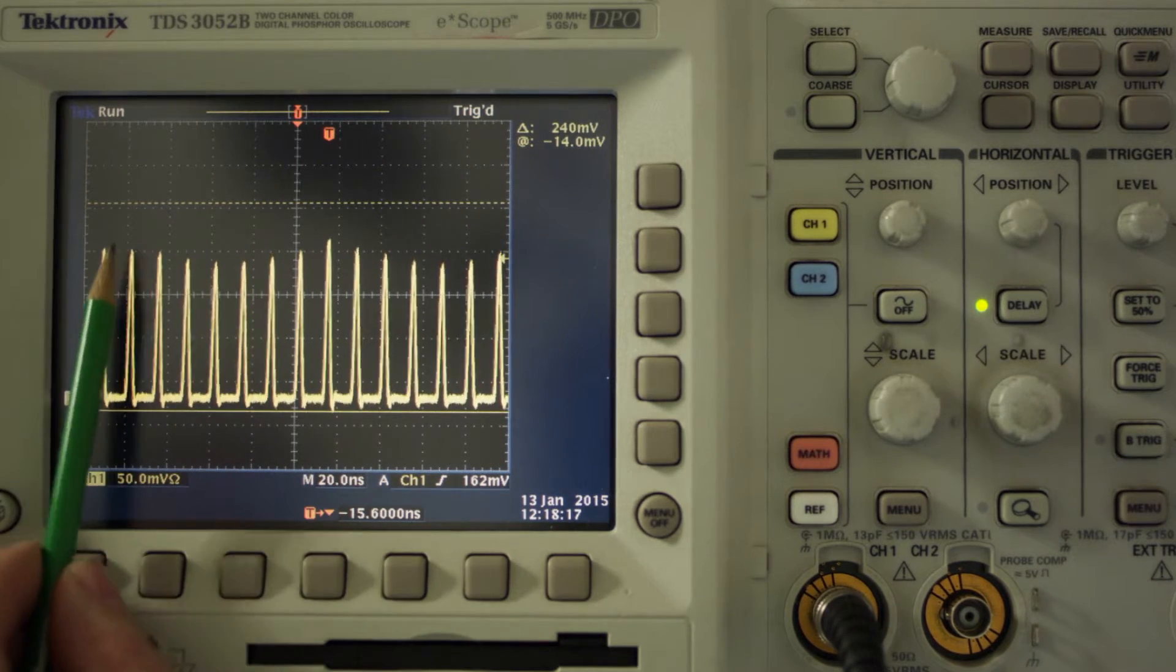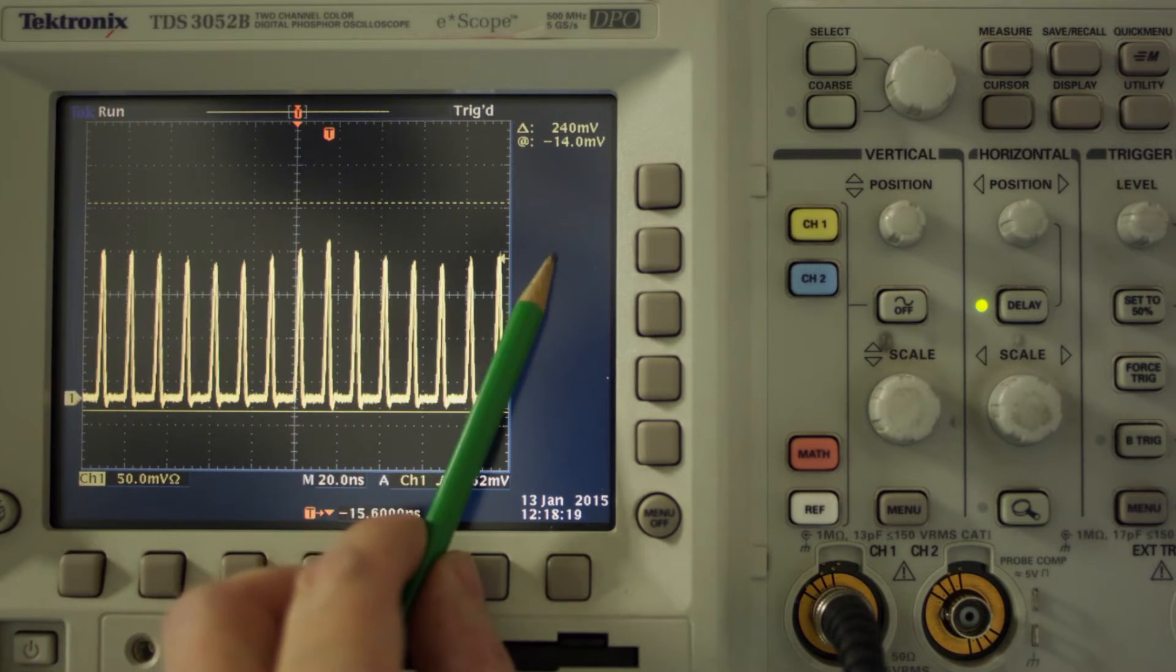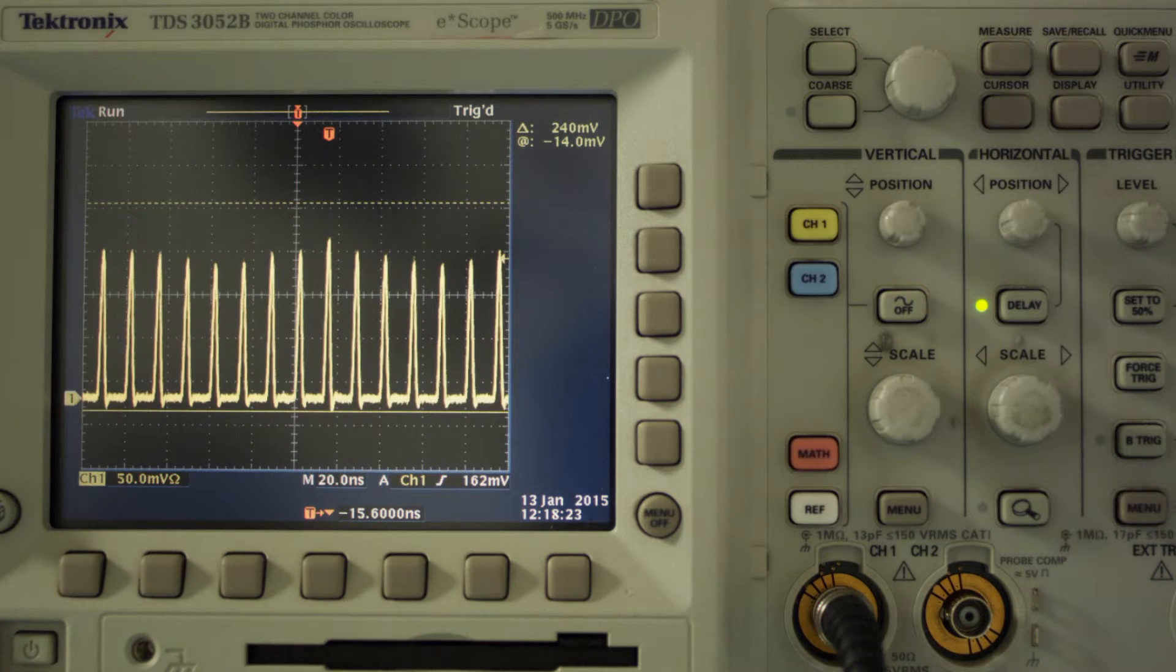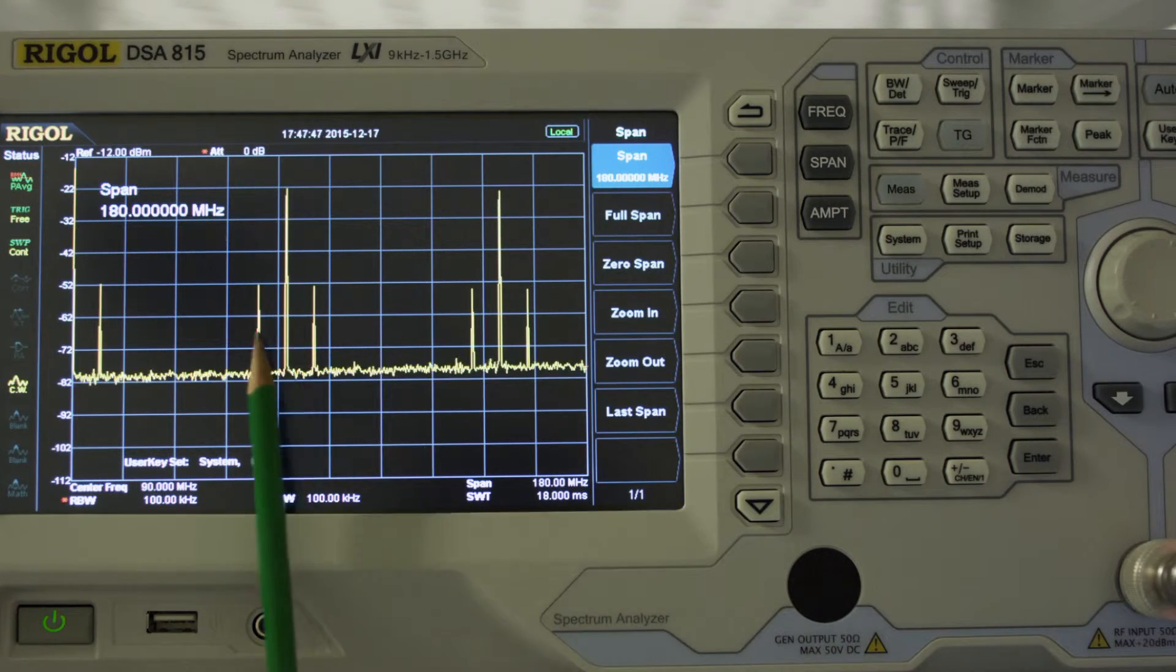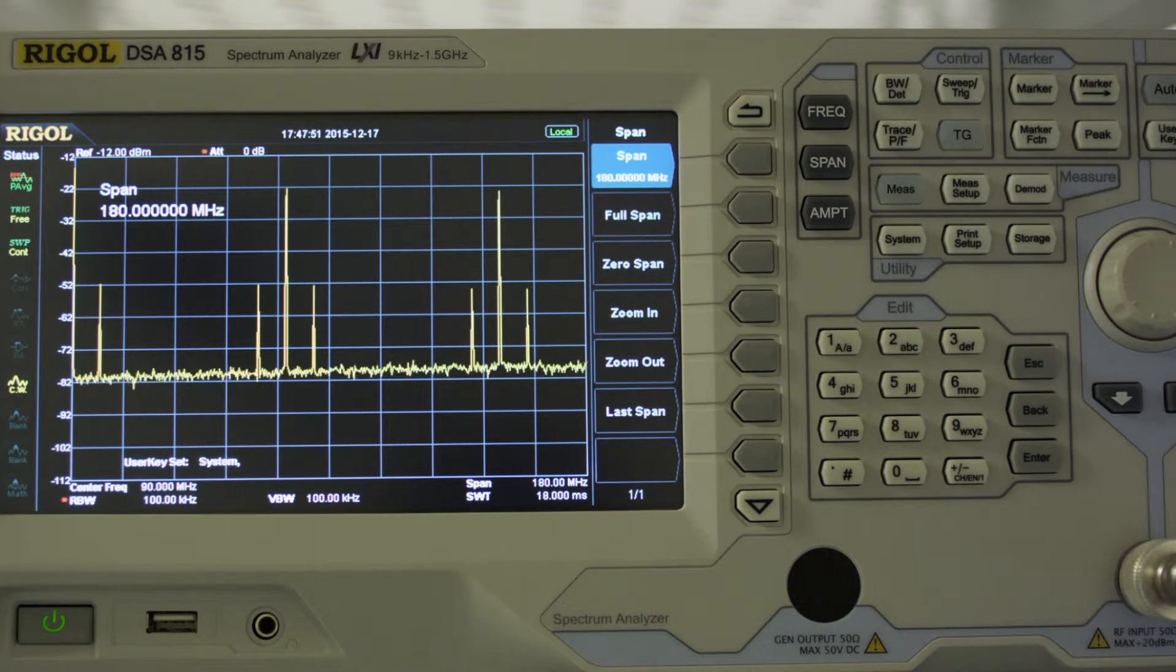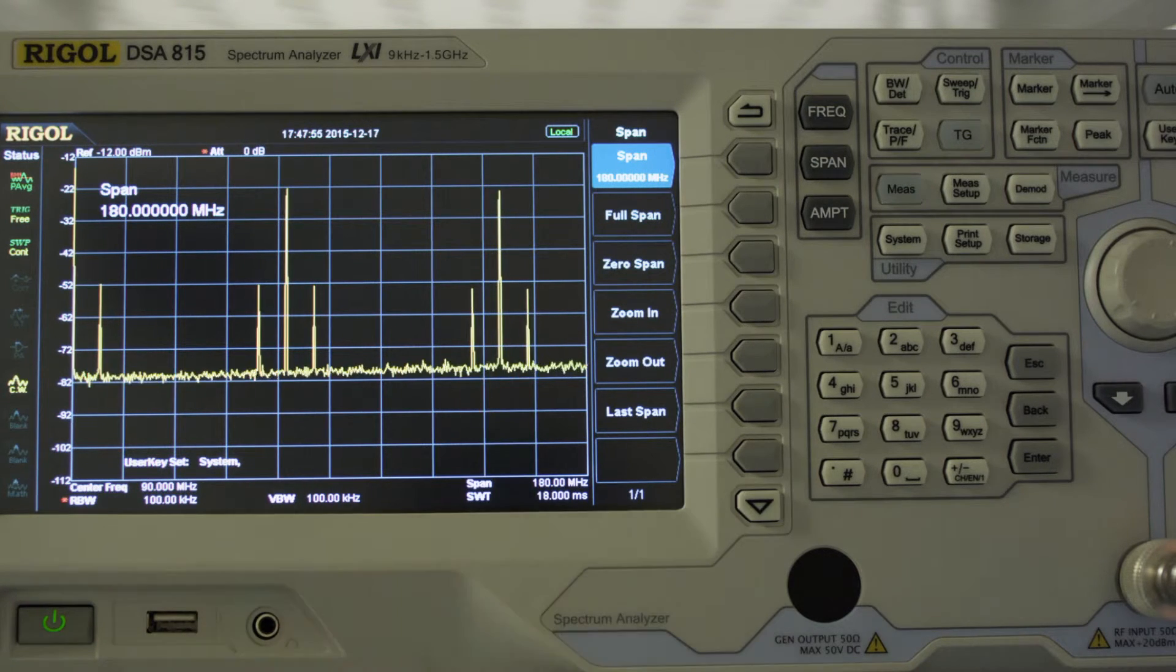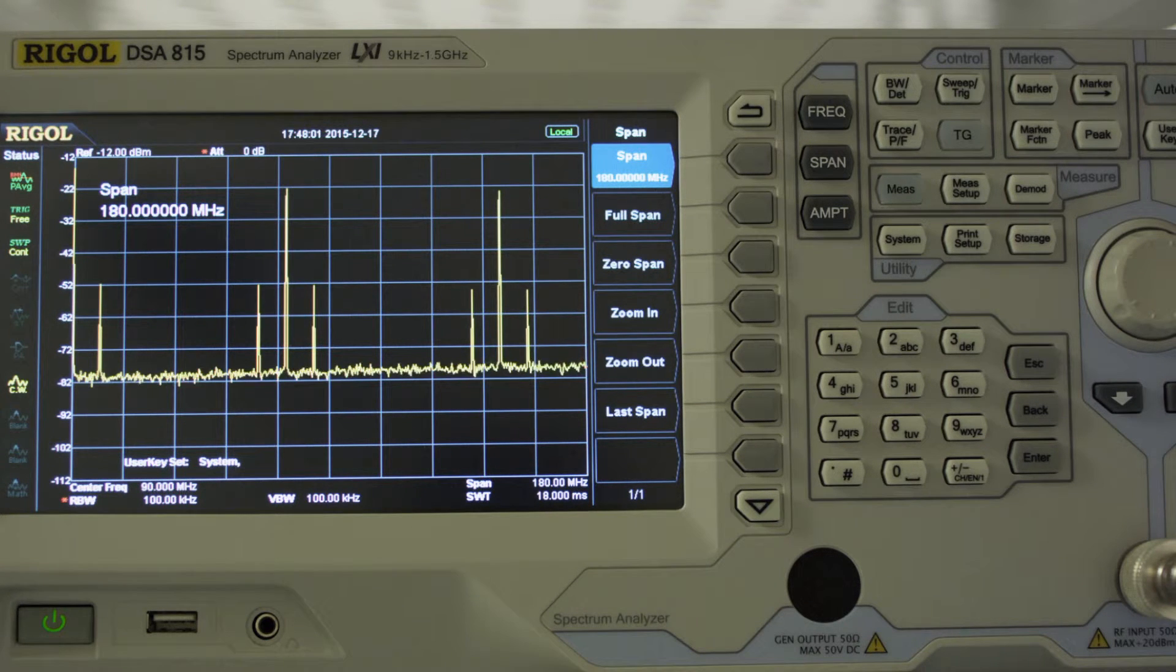What you clearly can see is this beating on top of it. And the frequency of that is actually the carrier envelope offset frequency. Let's have a look at the spectrum of that signal. The pronounced peaks you see here are coming from the repetition rate. This is the repetition rate itself and this is the second order. And the side bands here, this is the carrier envelope offset frequency.